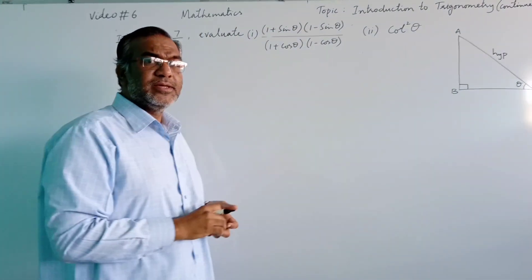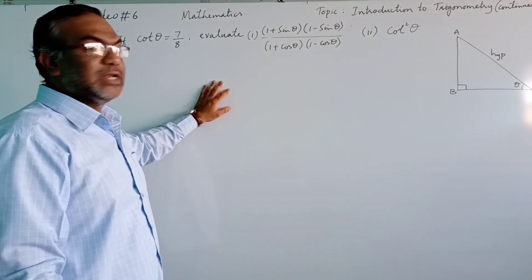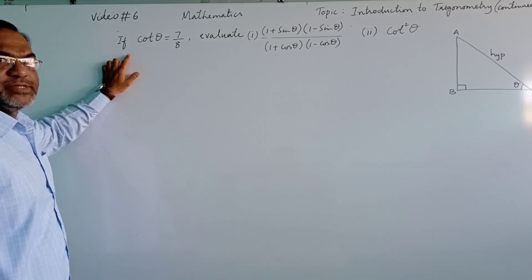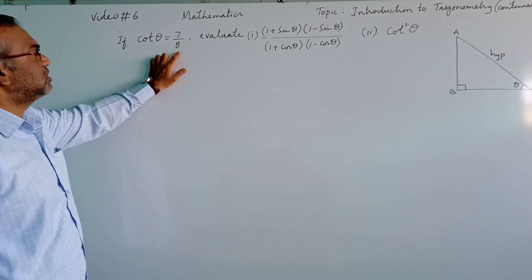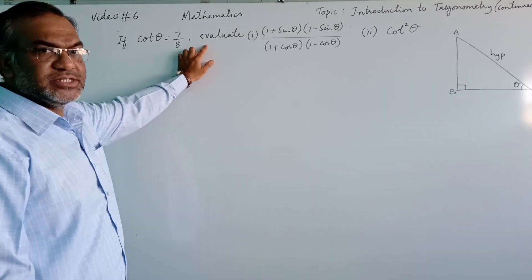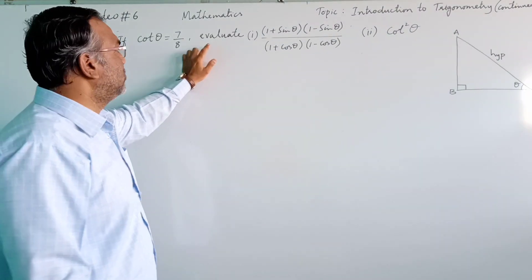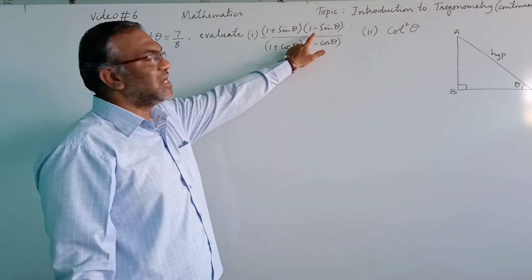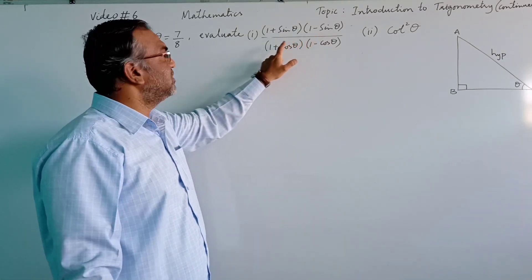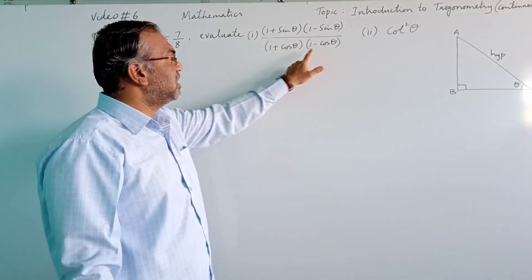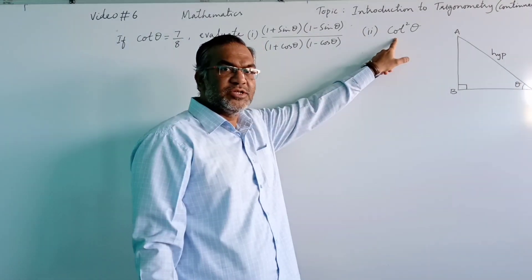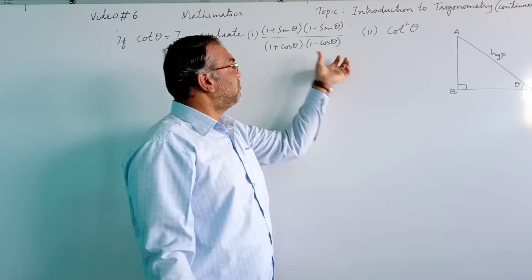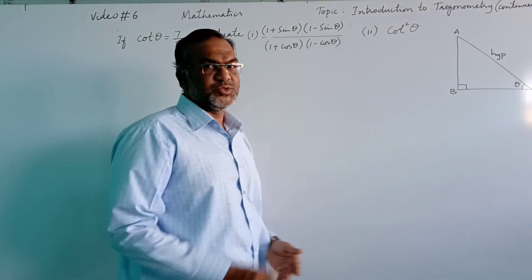As you can see, I have already written one problem. The problem is: if cot theta is equal to 7 by 8, evaluate — that means calculate the value of — (1 plus sin theta) into (1 minus sin theta), whole divided by (1 plus cos theta) into (1 minus cos theta). And the second question is cot squared theta. We will first evaluate the value of this, and then the second one.